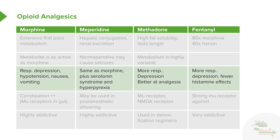In terms of respiratory function, morphine does cause mild respiratory depression and low blood pressure. It can cause nausea and vomiting in some patients as well. With meperidine, the side effect profile is pretty much the same as morphine, but you can actually induce a serotonin syndrome and hyperpyrexia. Methadone has more respiratory depression but is better at analgesia. Finally, fentanyl has more respiratory depression but has fewer histamine side effects.